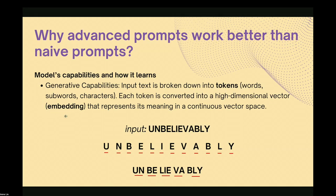The reason advanced prompts work better than naive prompts comes down to tokenization. For generative AI, the input text is broken down into tokens — which can be words, subwords, or characters. For example, inputting 'unbelievably' — it first breaks down into characters or letters, then groups them into subwords like 'UN' or 'B,' then combines them. Each token is then converted into a high-dimensional vector called an embedding, which maps words to their meaning, enabling the chatbot to output its response.